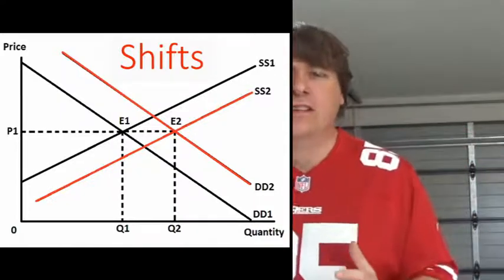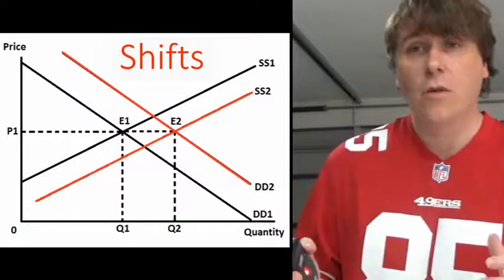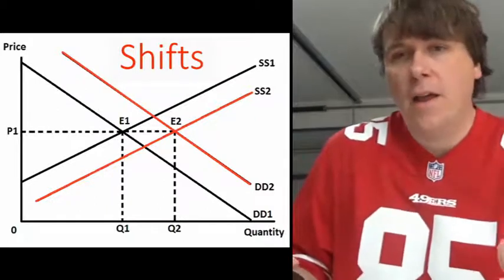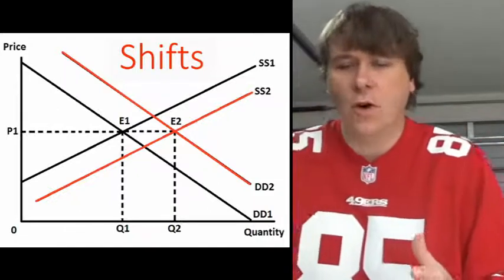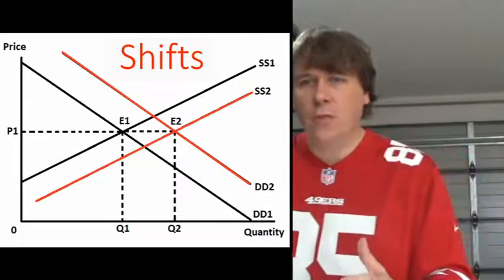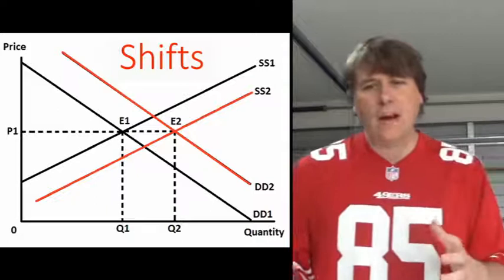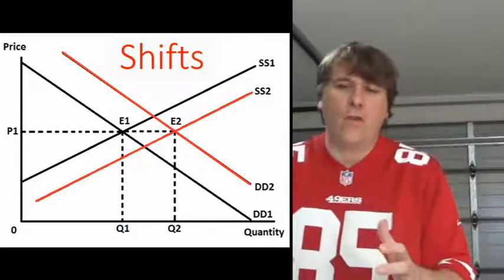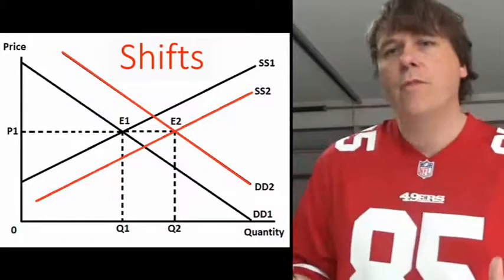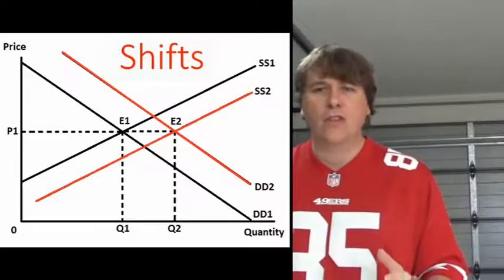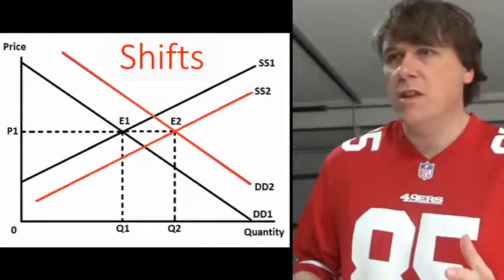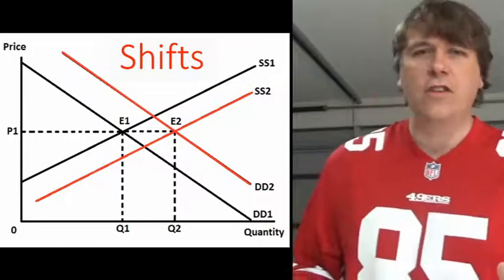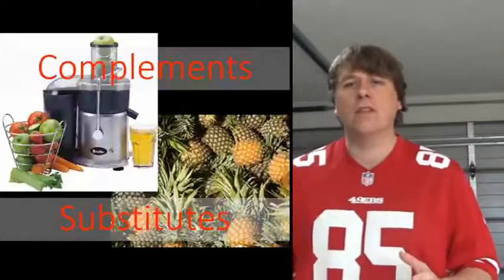Population increase may not necessarily result in a higher price though, because more people aren't just consuming — they're also joining industry and producing more, so you'd get an increase in supply as well. Whether the price goes up or down depends on whether the increase in supply is greater than the extra demand. What you should almost certainly see with population growth is a higher quantity in the market, since both the supply and demand curves are shifting outward.